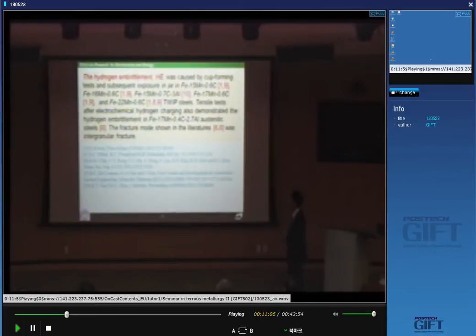Tensile test after electrochemical hydrogen charging also demonstrated hydrogen embrittlement in iron-manganese-carbon-aluminum austenitic steels. This was found in 1994. The fracture mode shown in the literature was intergranular fracture.